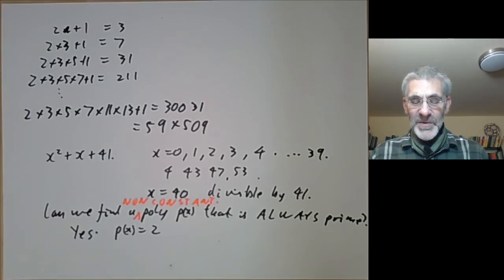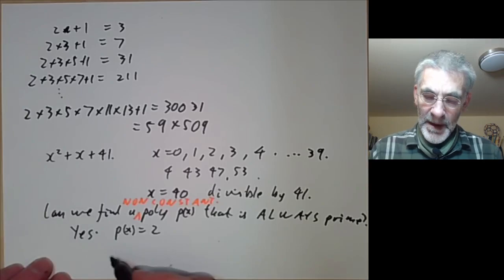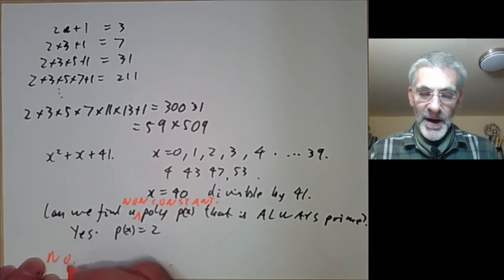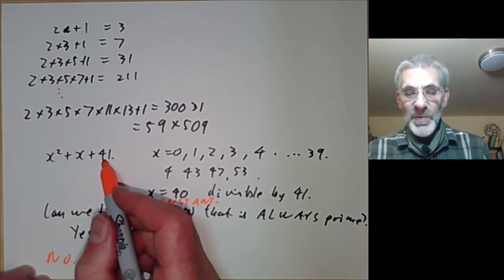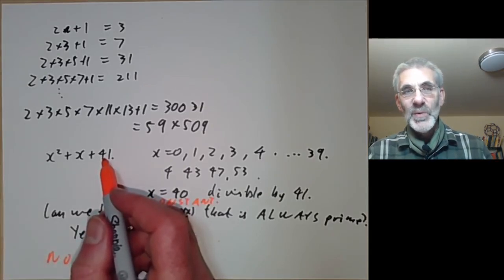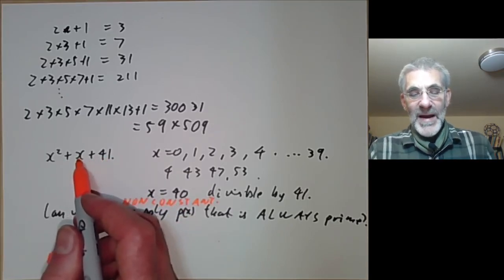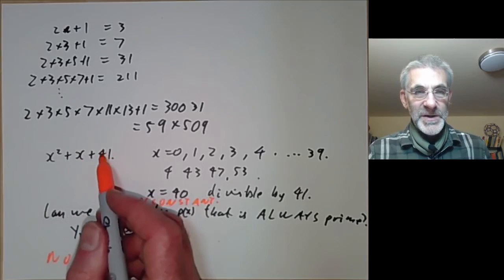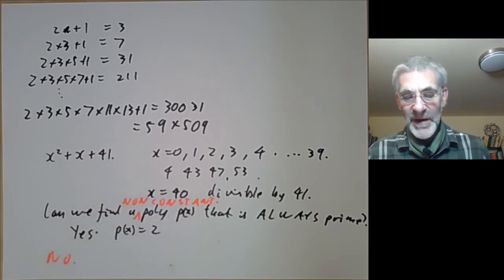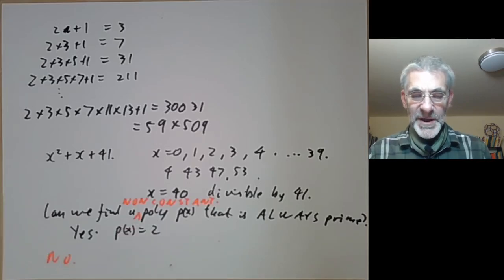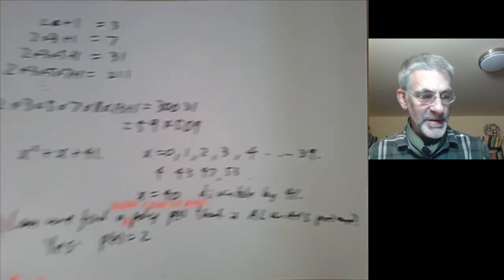So that deals with all polynomials except ones with the constant term equal to 1 or minus 1. But if the constant term is 1 or minus 1 then you can just change the polynomial by say adding something to x to make the constant term not equal to 1 or minus 1 and then the previous proof will apply. So there are no polynomials that generate primes apart from completely trivial ones.